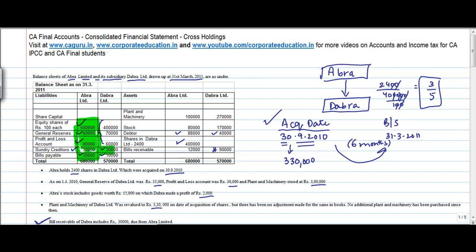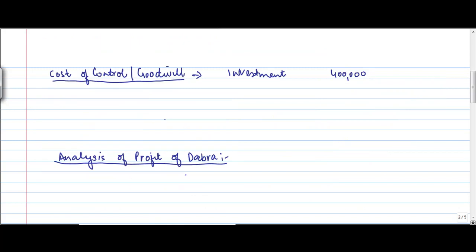Okay. These two are also gone. Debtors are gone. This is gone. And bill receivable is gone. Let's move on to the next lot. Let's make these adjustments one by one. So first is what? First, you need to compute the cost of control. So I invested 4 lakh in this company.